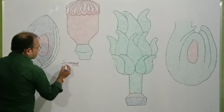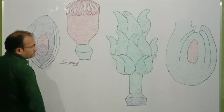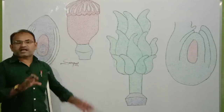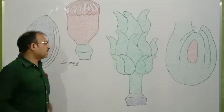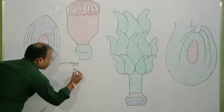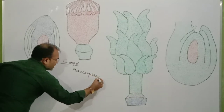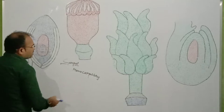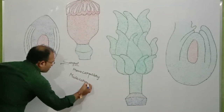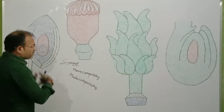I will use some biological terms here, so listen carefully. The formation of gynoecium happens from the association of one or more carpels. When carpels are one or more in number, that condition is called multicarpellary.